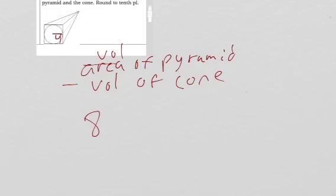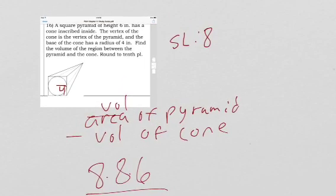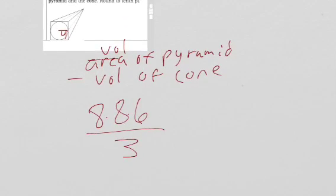We're going to do 8 times 8 times 6 divided by 3. That is length times width times height divided by 3. It does say the pyramid has a height of 6. So let's do this really quick.